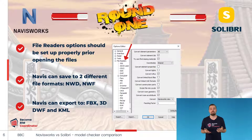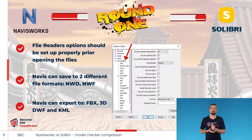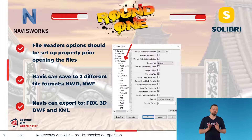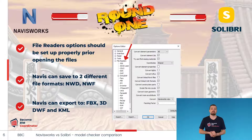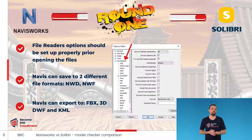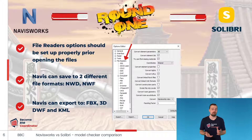Although Navisworks can read a wide variety of file formats, it needs to be properly configured. I wouldn't recommend using the default reading settings, as you might not be able to see certain elements or information contained in the model. It's a good idea to familiarize yourself with the various reader settings before importing different file formats into Navisworks. Navisworks can save to two different file formats: NWD and NWF, which vary in size and purpose.